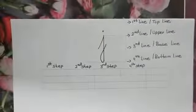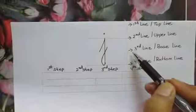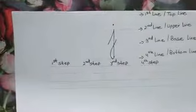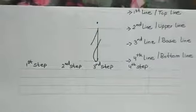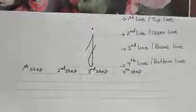For writing small cursive J, we will be using the second, third and the fourth line. Now, let us learn to write small cursive J step by step.